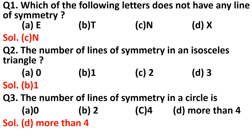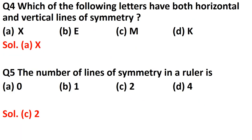Question number three: the number of lines of symmetry in a circle. Option A is zero, B is two, C is four, and D is more than four. The correct answer is D, that is more than four. A circle has an infinite number of lines of symmetry, so we can say it is more than four.